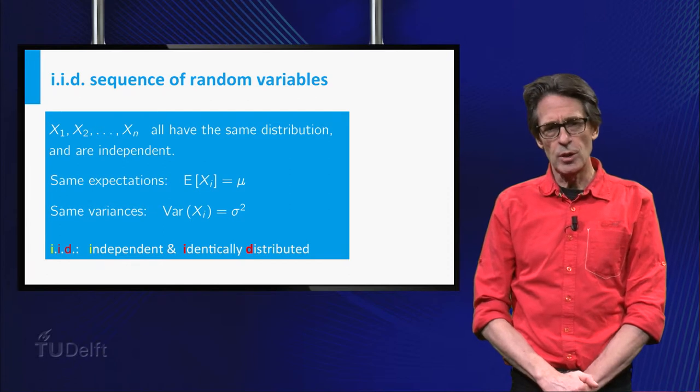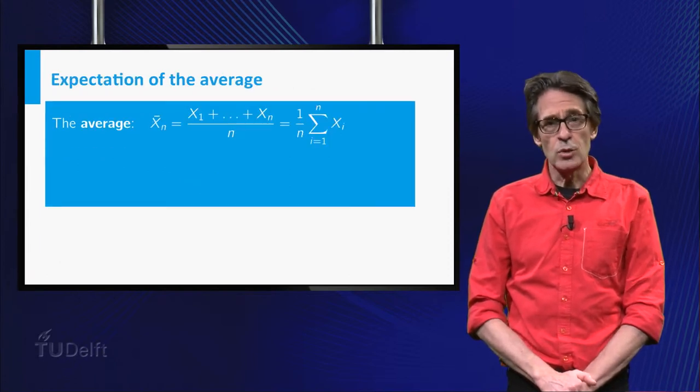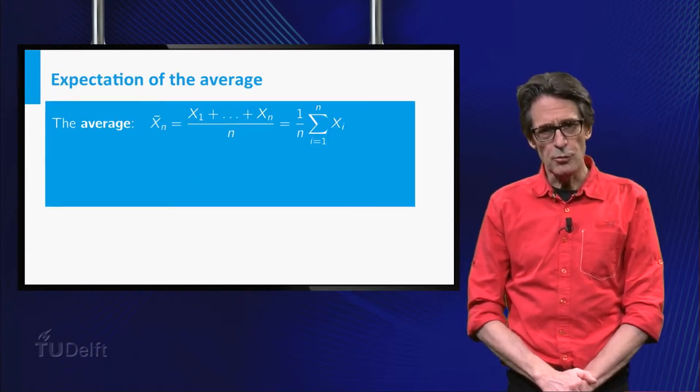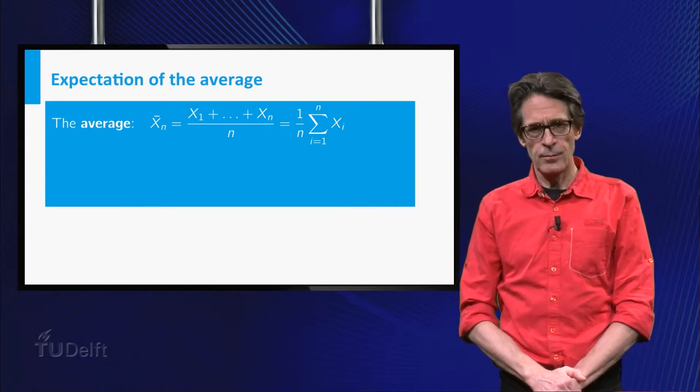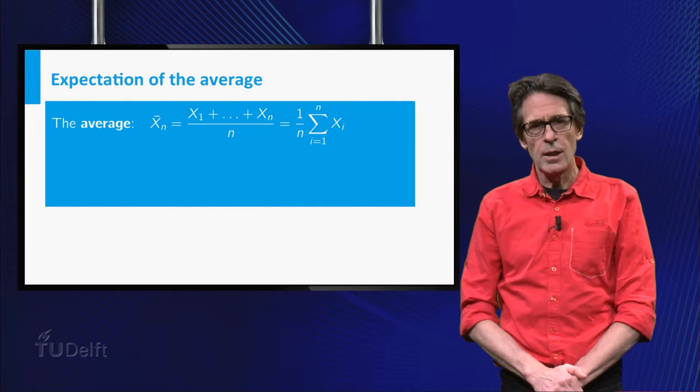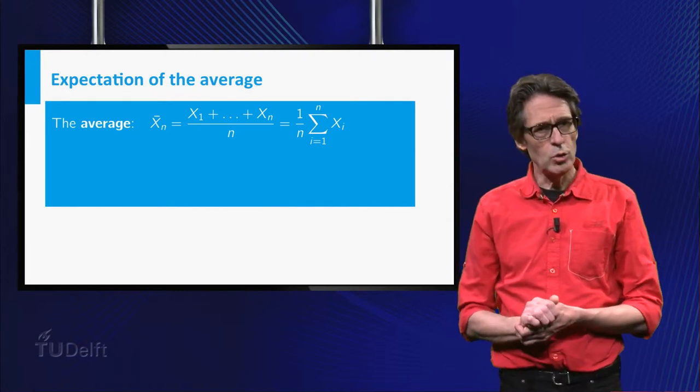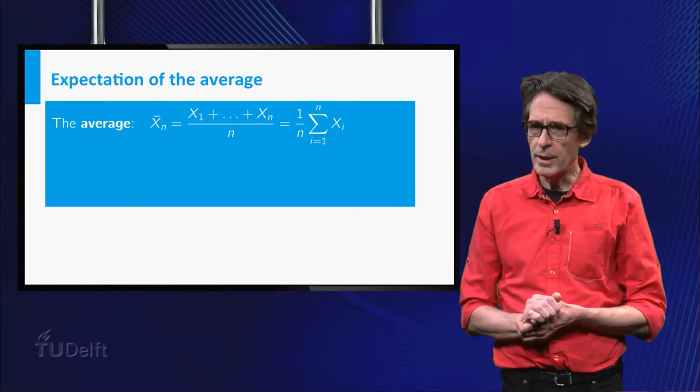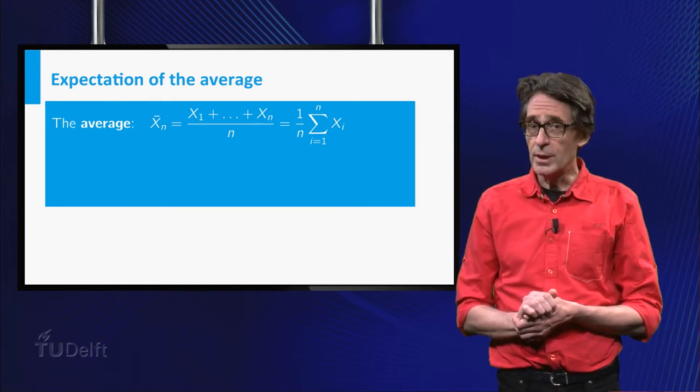The average of the sequence is denoted by x̄ₙ, so x̄ₙ equals 1 over n times the sum. In a measurement example, the random variables xᵢ are the individual measurements. It is quite something to assume identical distributions and independence. How would you guarantee this in practice?